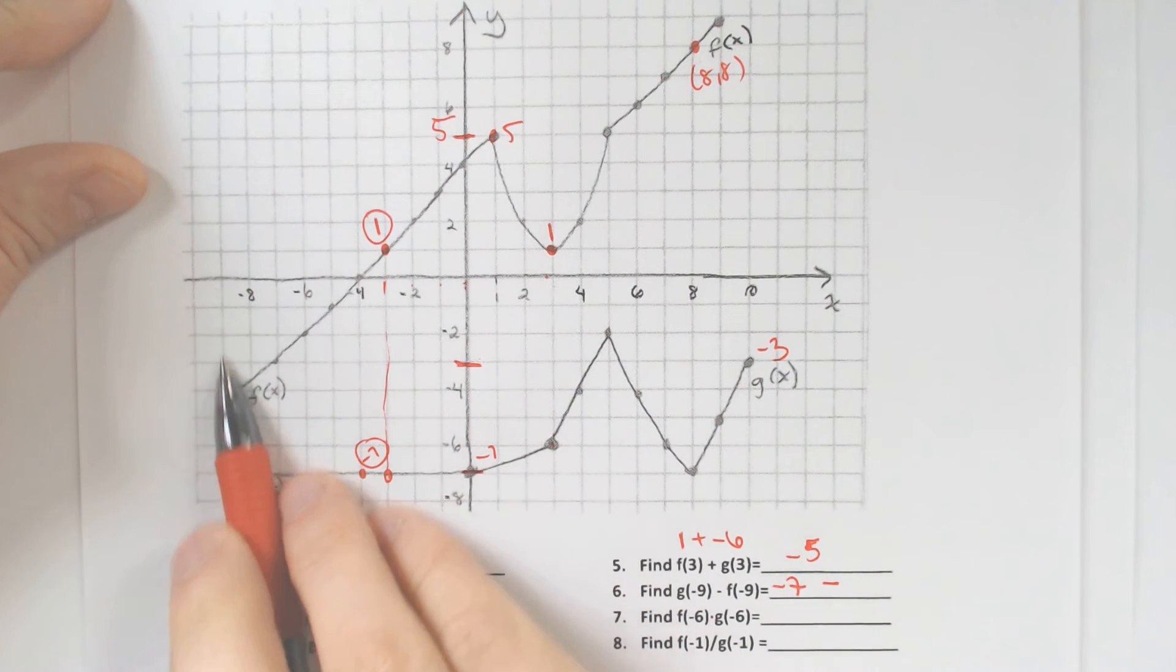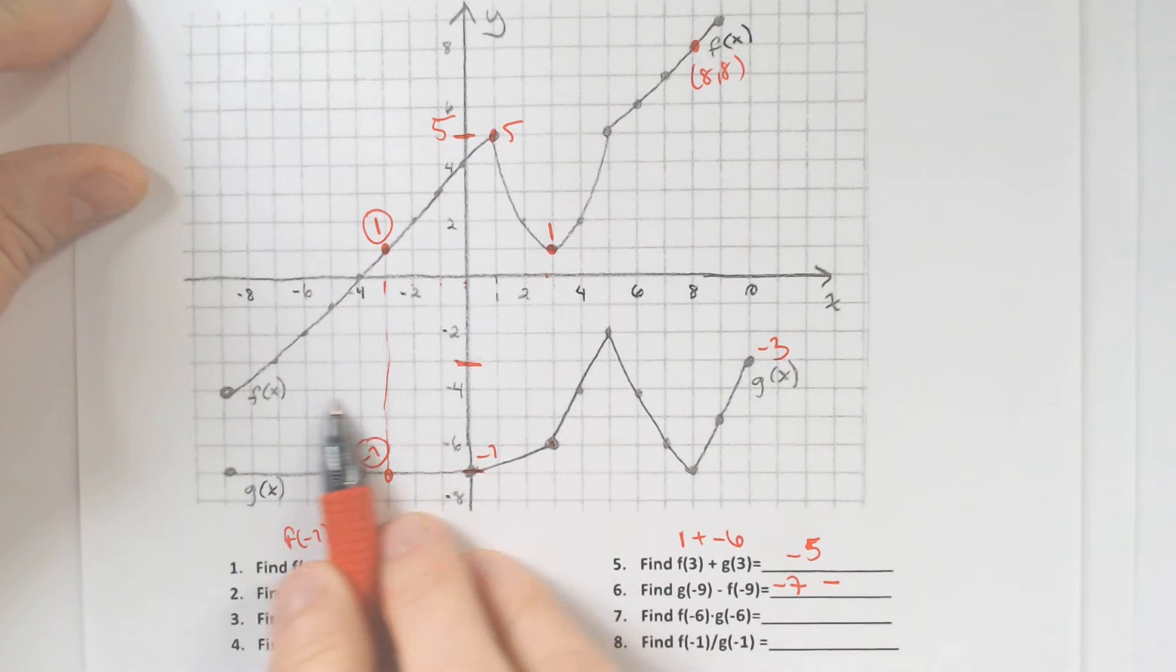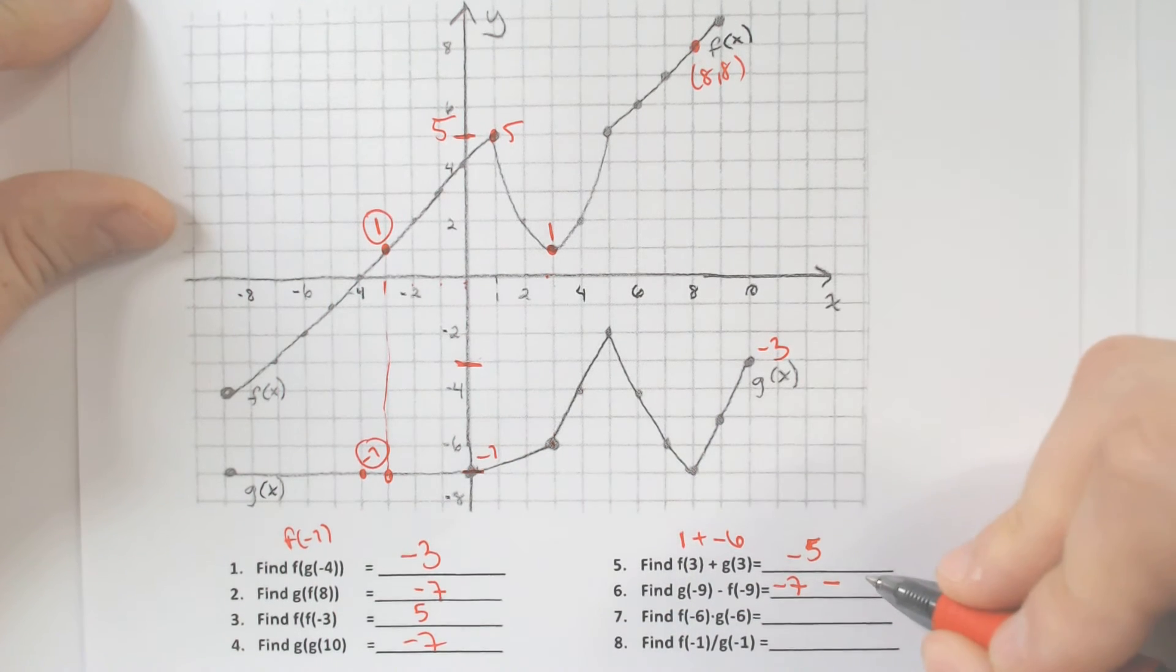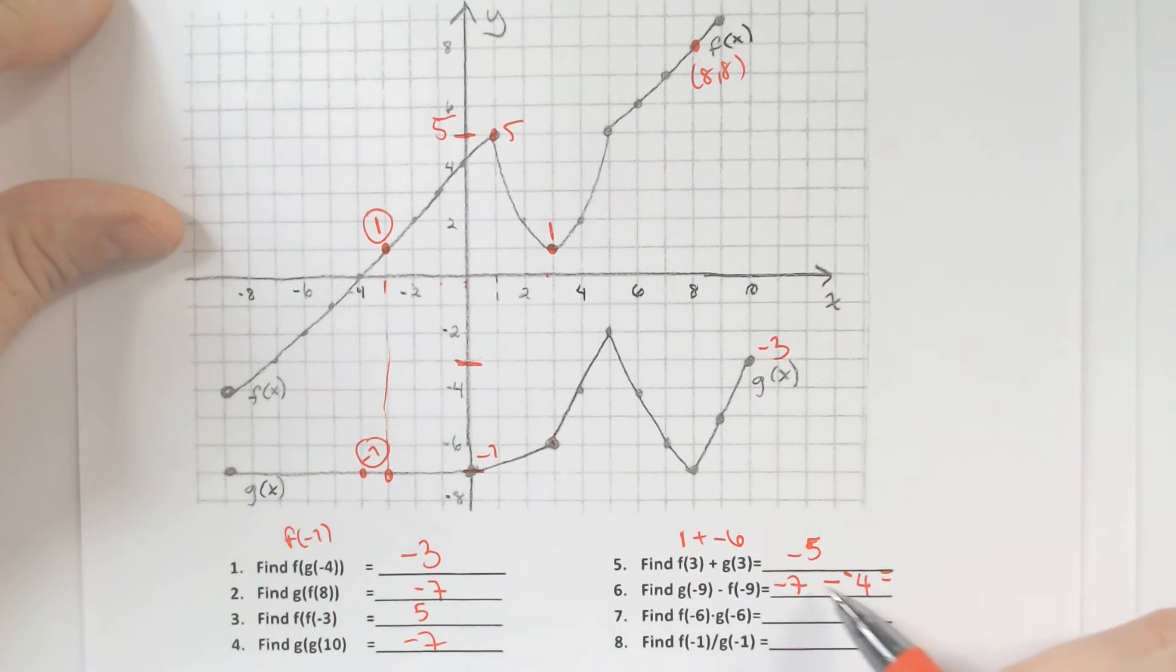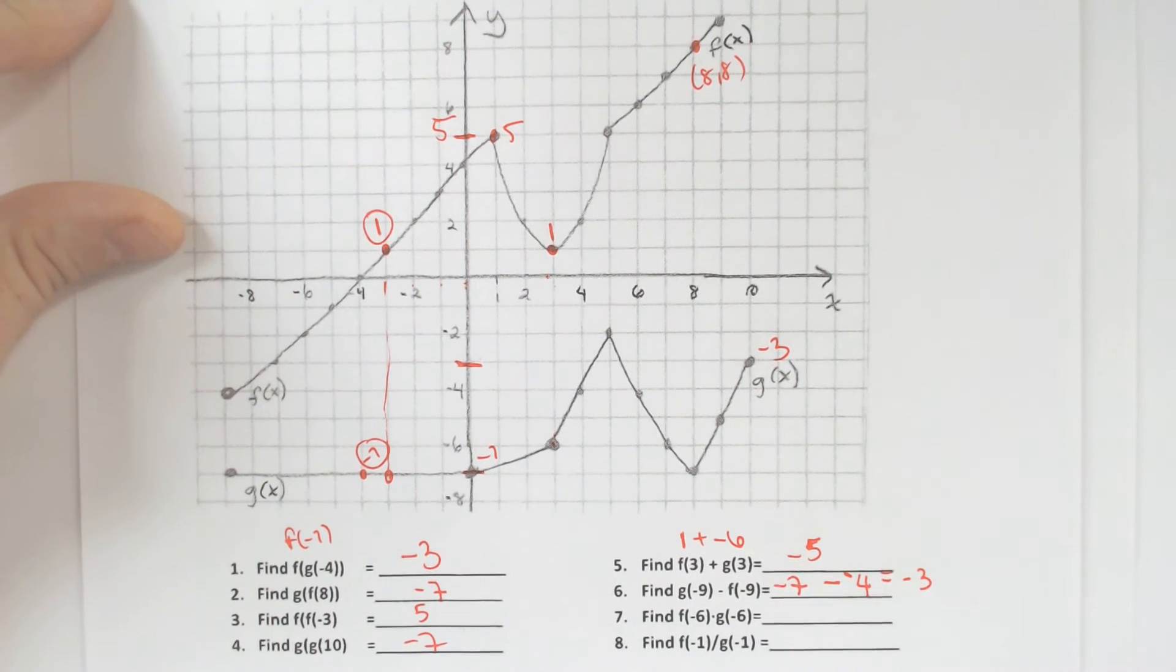f of negative 9 is at negative 4 because you scroll to the y values and you're at negative 4. So negative 7 minus negative 4 ends up being negative 7 plus positive 4, which is equal to negative 3.